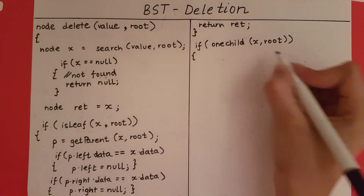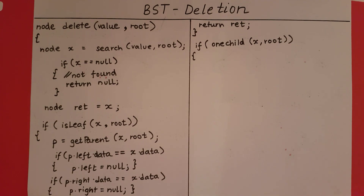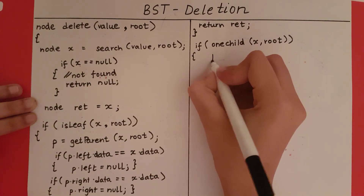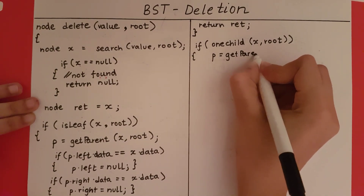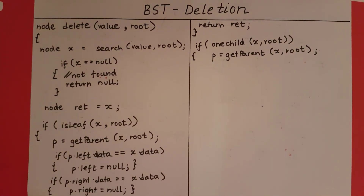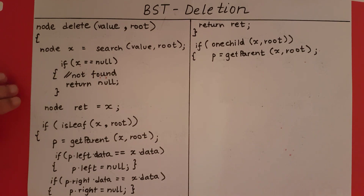If x only has one child, we need to replace x with that one child — that is, we link the parent to the child of x. First let's get the parent of x: p is equal to getParent(x, root). Then we check whether x is the left subchild of p or the right subchild of p, and link accordingly. If x is the left subchild, we replace the left subchild of p with the child of x. Similarly if x is the right subchild, we replace the right subchild of p with the child of x.